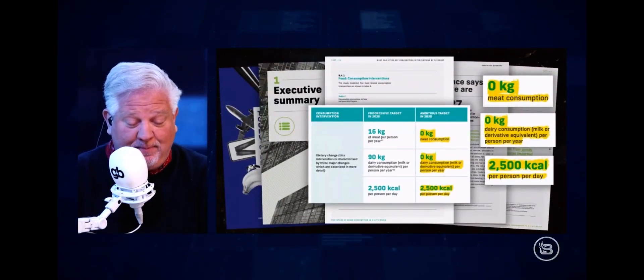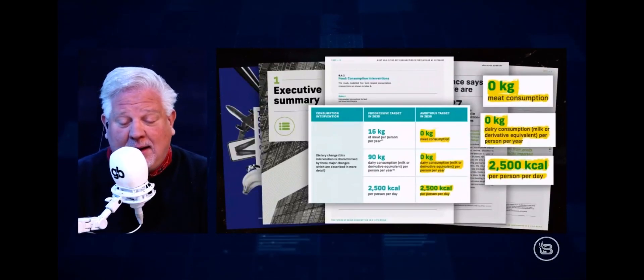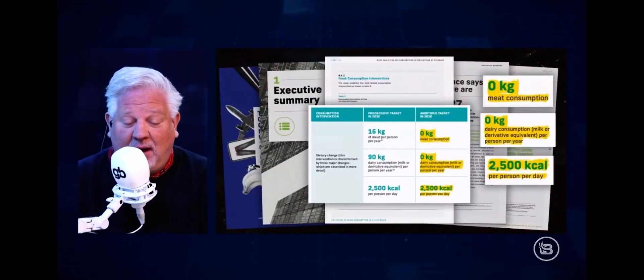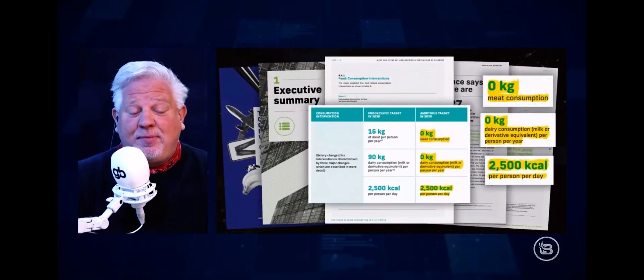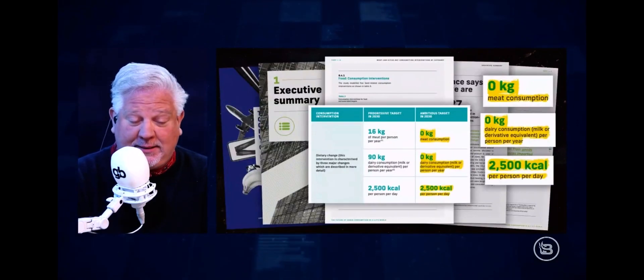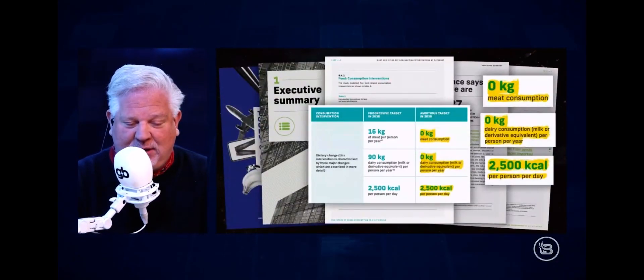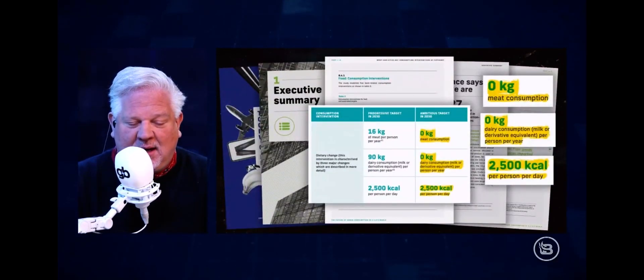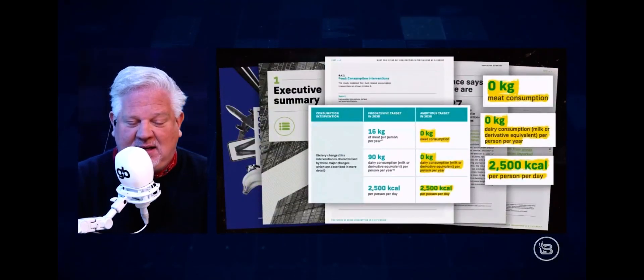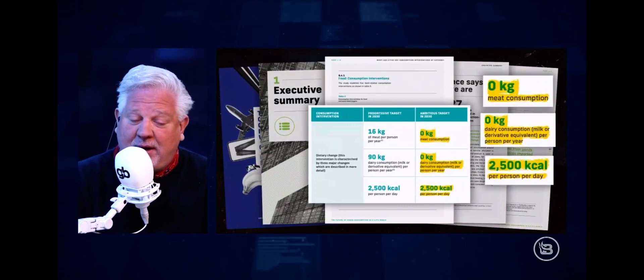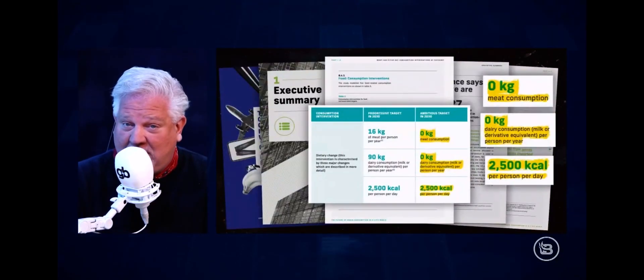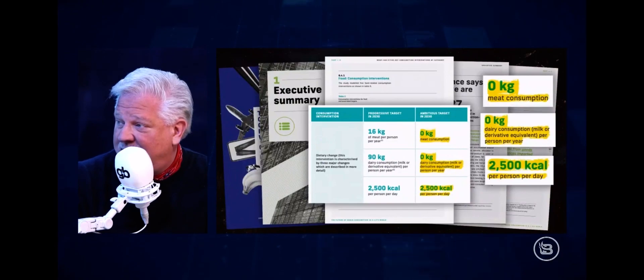So food, they need to reduce the emissions of food by 2030. So their target by 2030 is you will only have 16 kilograms of meat per year. Now their aggressive target for 2030 is that you have zero kilograms of meat.